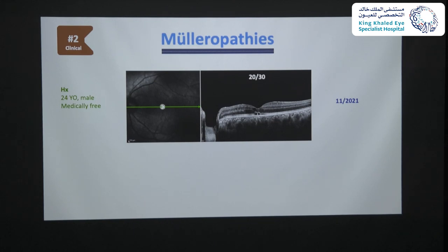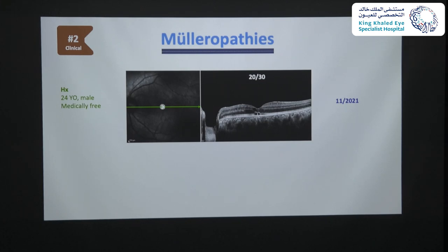The second muelleropathy case is a 24-year-old male, medically free, presenting with this OCT in November 2021. One can clearly see foveal cavitation, not a typical eyelid drape sign, but prominent discontinuation of the ellipsoid zone. Importantly, no history of trauma and no history of laser. The other eye is perfectly normal. It is very close to the MacTel phenotype, except that the foveal cavitation in this patient is on the nasal fovea, while in MacTel it is typically in the temporal fovea or temporal juxtafoveal area.